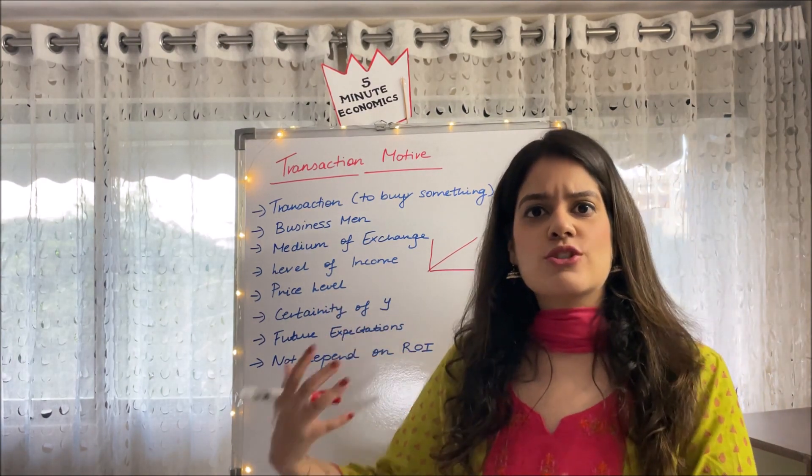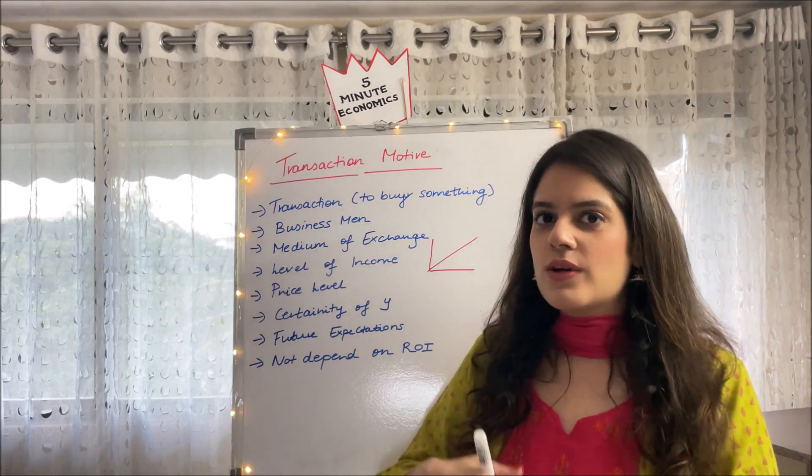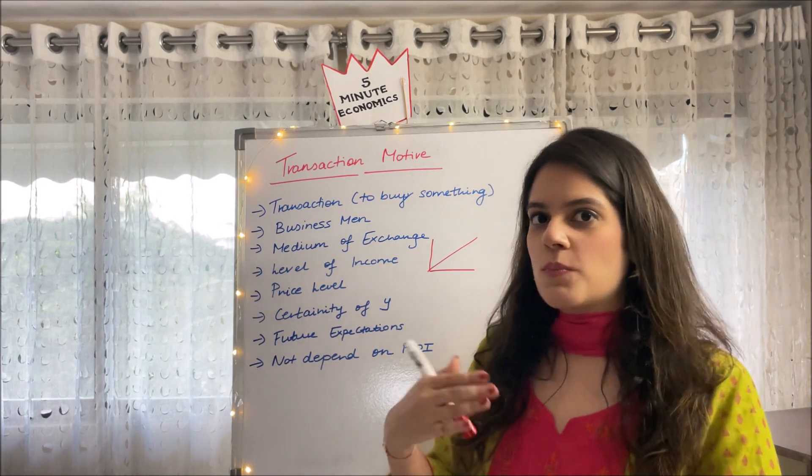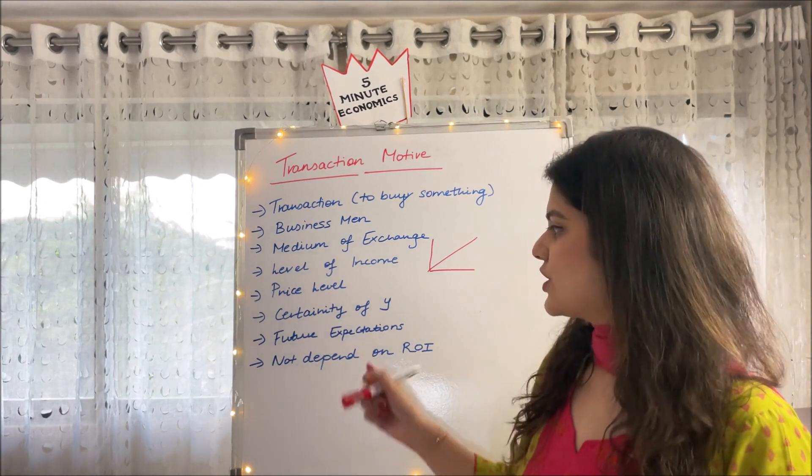Moving ahead to price level. Price level, like the level of income, also has a positive relationship with transactions. As the price increases we tend to keep more money with us. If price has doubled we have to keep more cash in hand to buy that good. So both are directly proportional to each other.